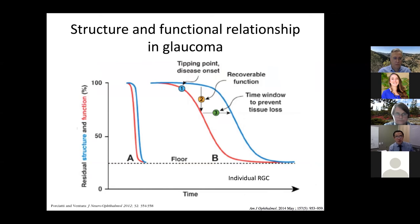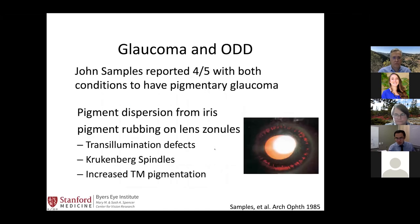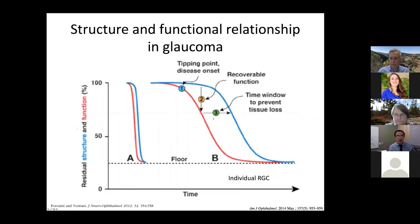I wanted to talk about the structure and function relationship in glaucoma. On the X axis is progression over time, with structure plotted in blue and function plotted in red. Sometimes you can have a change in visual field function that can precede actual neuronal loss — the neurons are only a little bit hypofunctioning, but they're not dead yet.